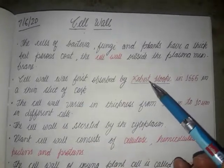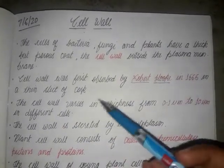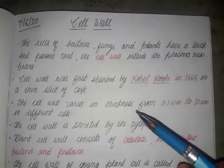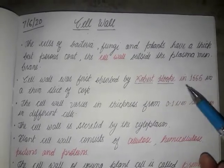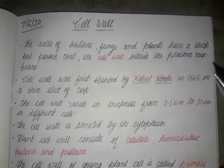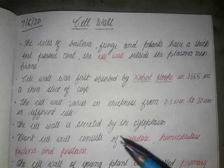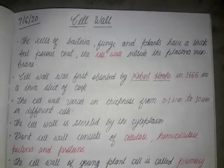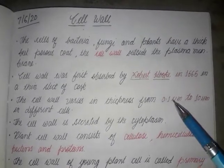The first observation goes to Robert Hooke. This was in 1665 — the same year in which the cell was discovered. So the cell wall was also discovered at the same time.